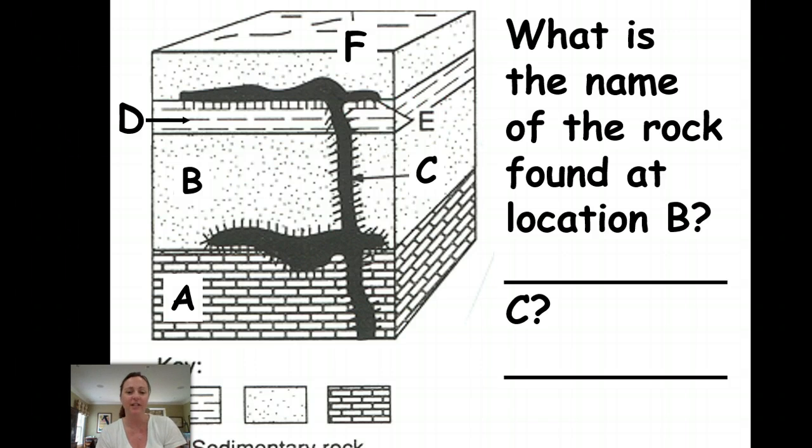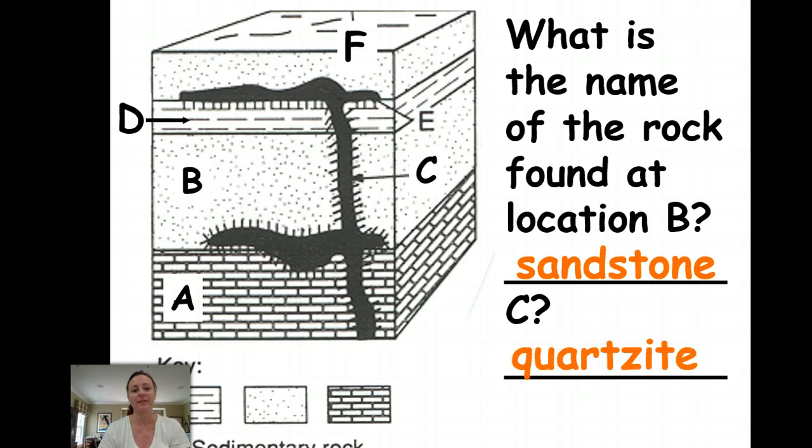Once you have your reference table out and you're looking at that sedimentary rock chart, you're going to then look to see what rock layer B will metamorphize into. What will it change into when it undergoes heat and pressure? That's the answer to C. So if you found that location B is sandstone and the metamorphism of sandstone is quartzite, then you're right.